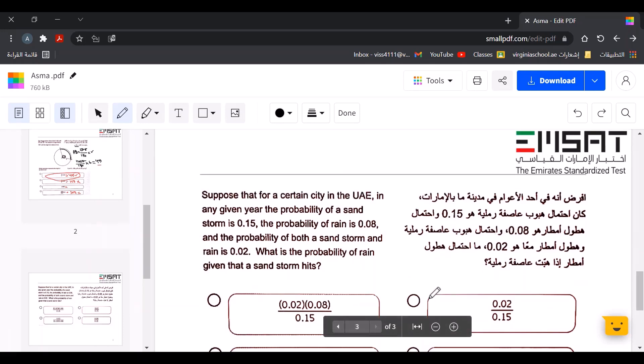Suppose that for a certain city in the UAE in any given year, the probability of a sandstorm is 0.15, and the probability of rain is 0.08,